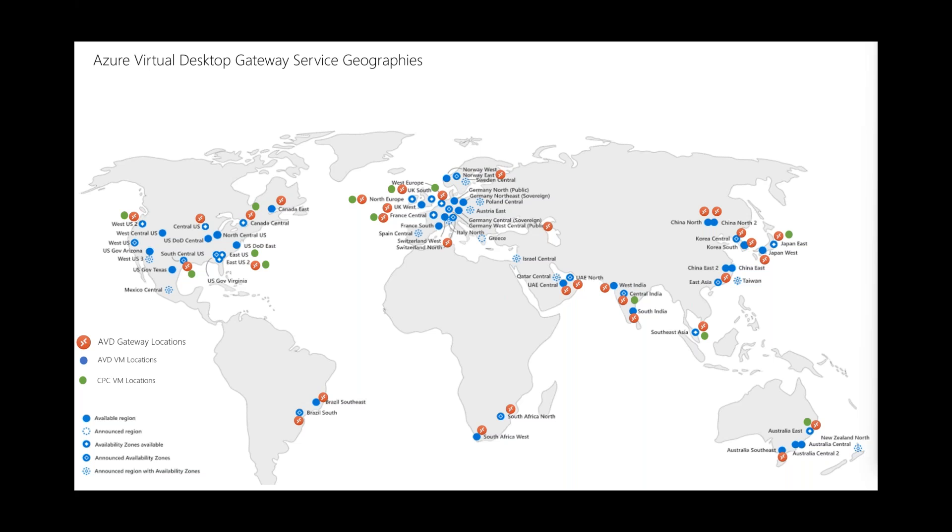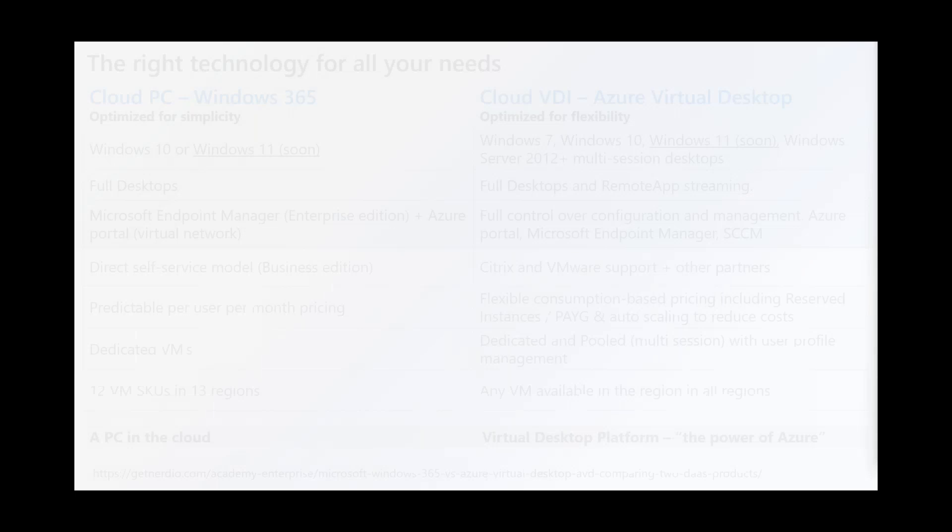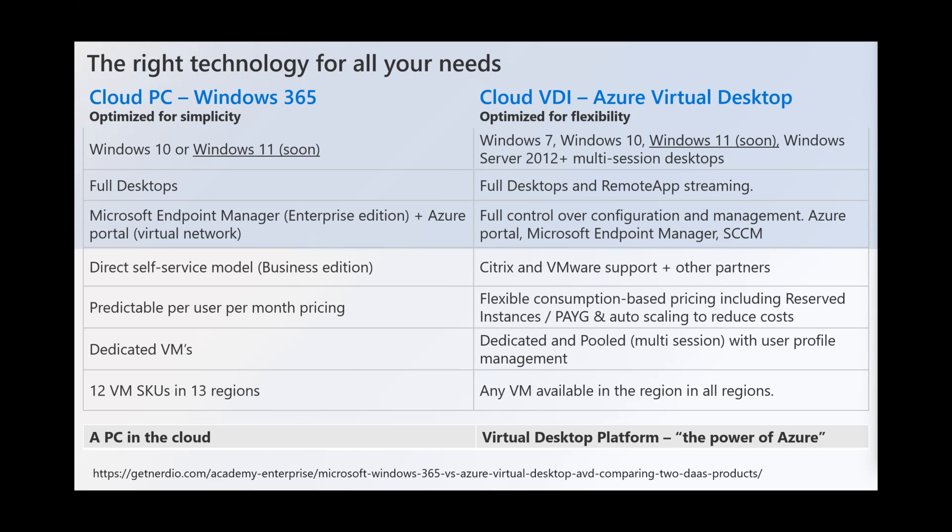Going into more detail on major differences: Cloud PC is designed for simplicity; AVD is your VDI or virtual desktop solution in the cloud, optimized for flexibility. As of today, Windows 365 only supports Windows 10 — Windows 11 is coming soon. AVD supports Windows 7, Windows 10, Windows 11 when it arrives, and Windows Server 2012 and up, including 2016, 2019, and 2022 when released, including multi-session operating systems.